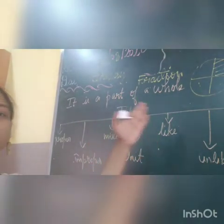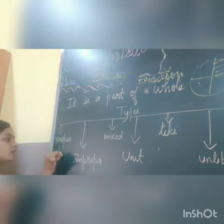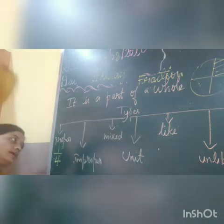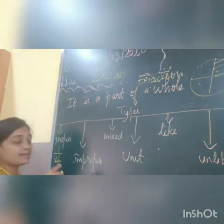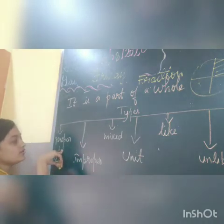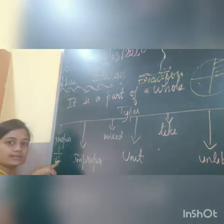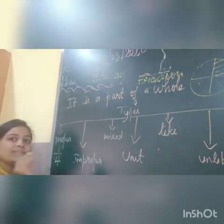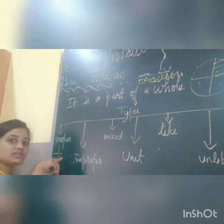What is a proper fraction? It is the normal fraction that we write. We wrote 1 by 4 — this is a proper fraction. If you see the number up, it is lesser than the number down. That is, 1 is lesser than 4. Always the number on the top should be less, and the number on the bottom — the denominator — should be more.